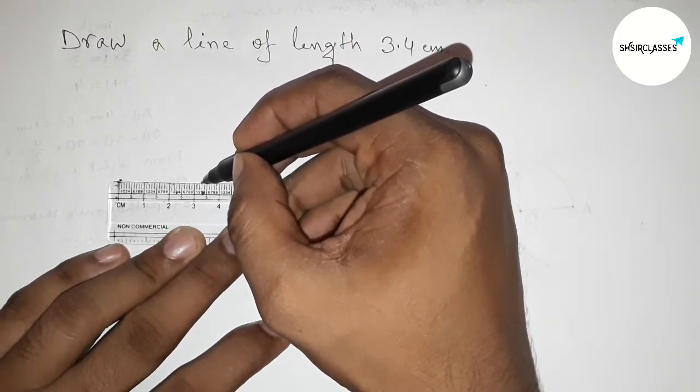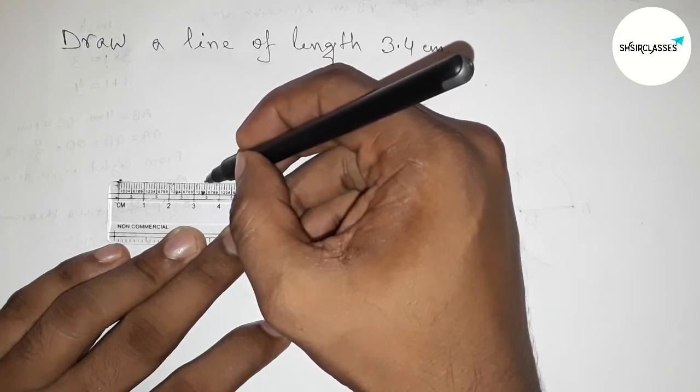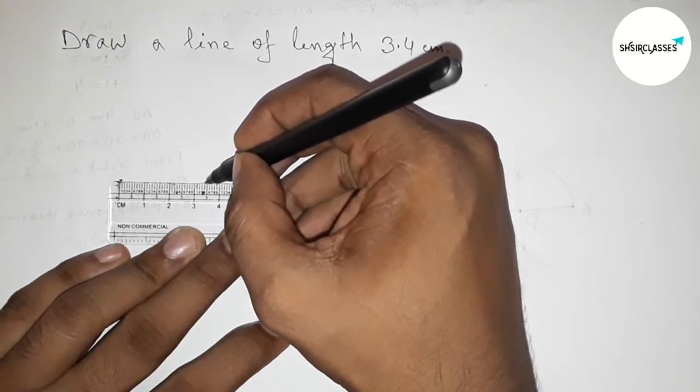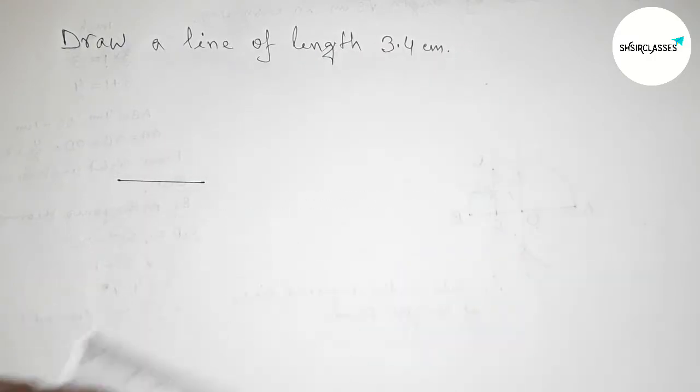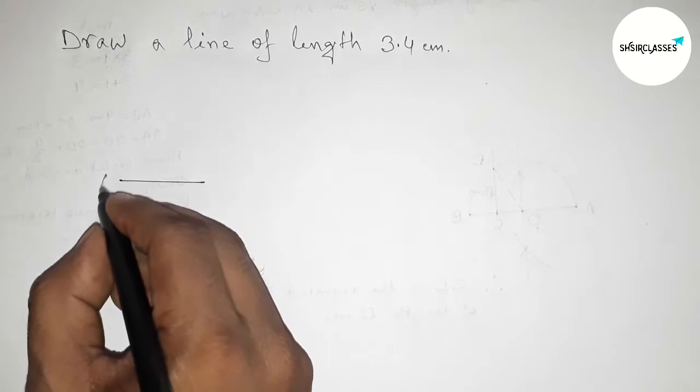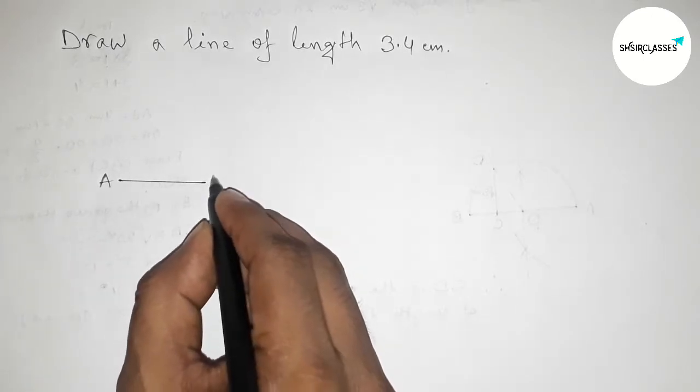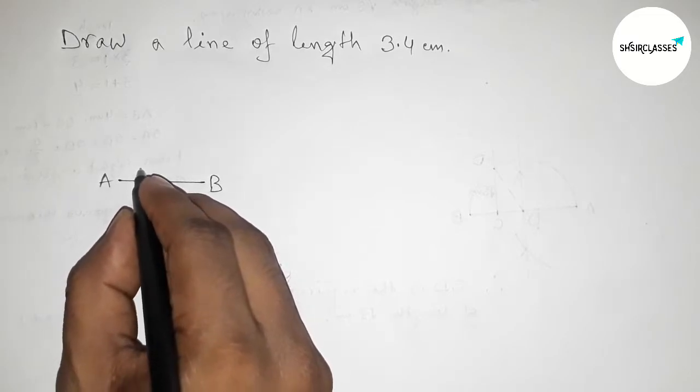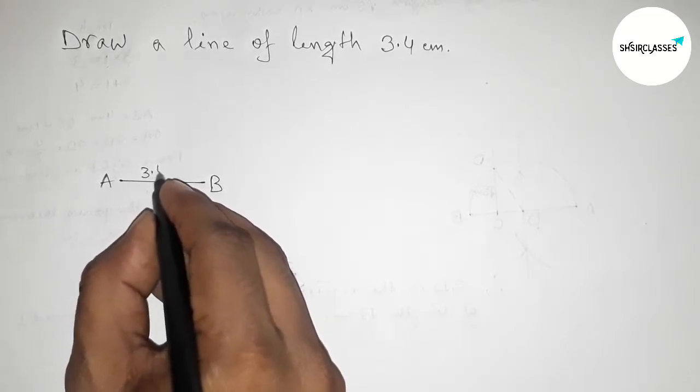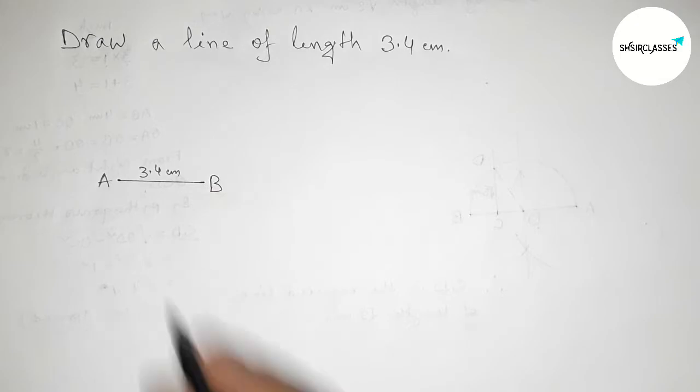We have to count 3.4 centimeter, so this is 3.1, 3.2, 3.3, 3.4. So this is 3.4 centimeter. So first marking this and joining this line. So taking point here A and here B. So here AB is a line of length 3.4 centimeter.